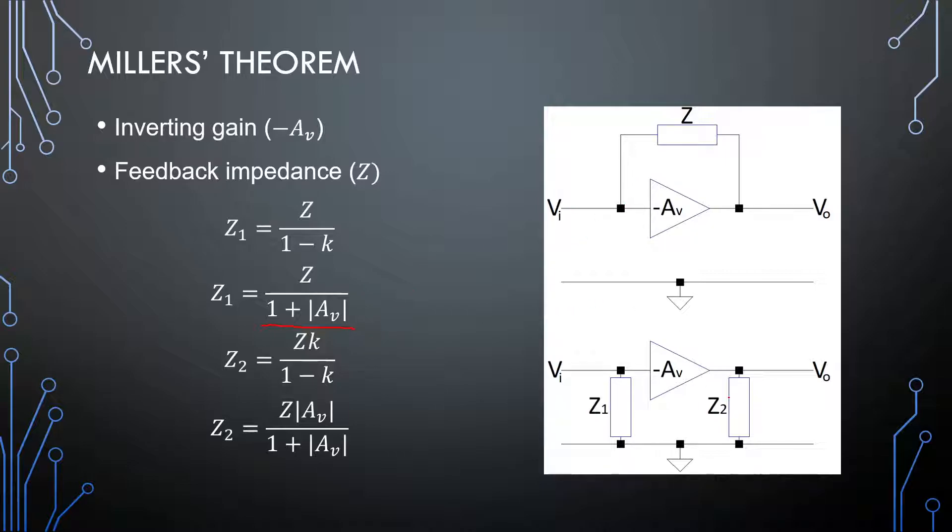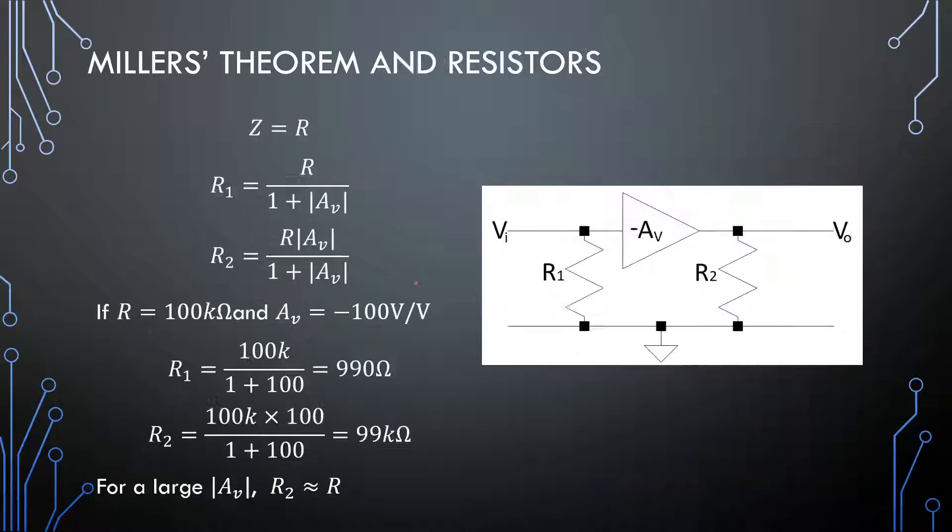The one on the output side would be Z multiplied by the gain over 1 plus the gain. So if the gain is large enough, the impedance here that we will be observing on the output will be approximately the same as that that we saw over our amplifier.